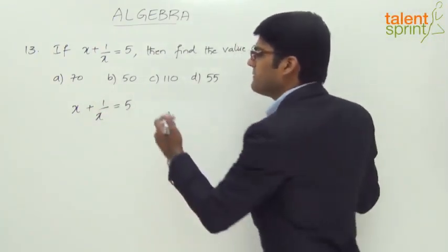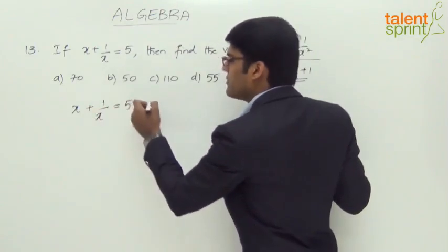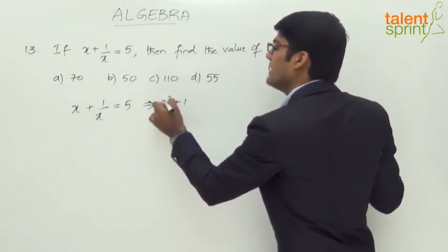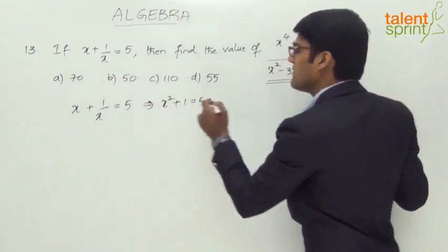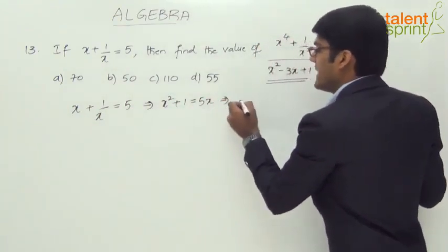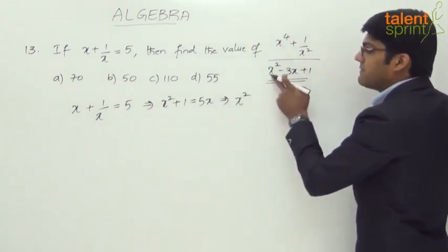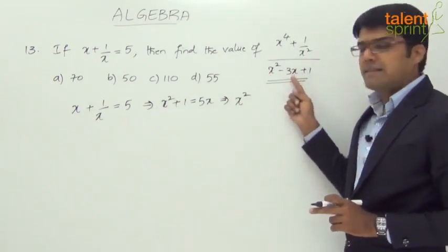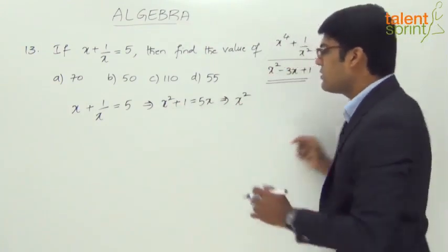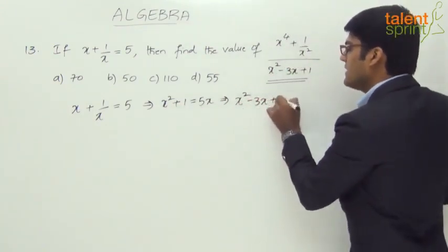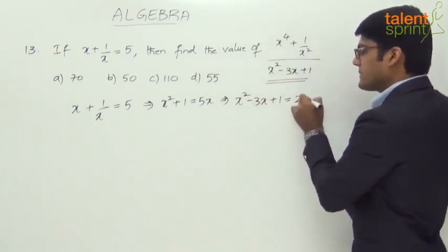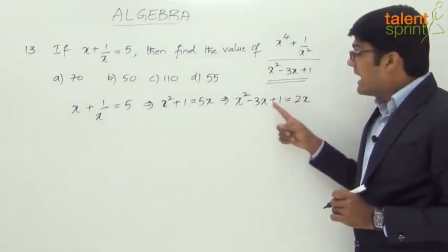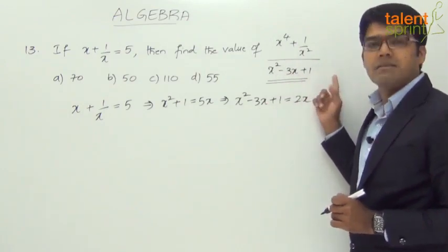So, x plus 1 by x equal to 5. Let us try to solve this. We can say that x square plus 1 equal to 5x. Or, from this, we can say x square. Now, look at this. We have x square minus 3x plus 1. We already have x square plus 1 on this side. We need minus 3x. So, subtract 3x on both the sides. What do we get? x square minus 3x plus 1 equal to 5x minus 3x, 2x. Are you going to follow? From x plus 1 by x equal to 5, what we have got is x square minus 3x plus 1, which is equal to 2x. And this actually is our denominator, x square minus 3x plus 1.